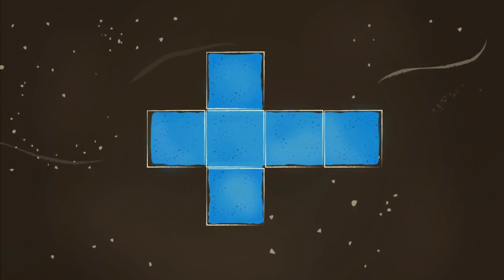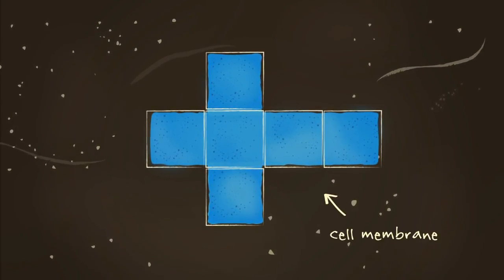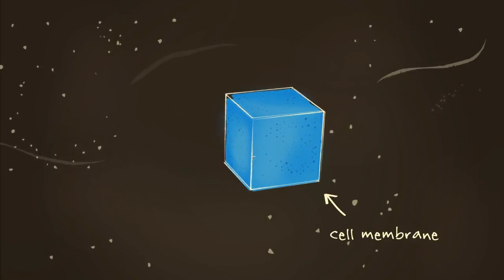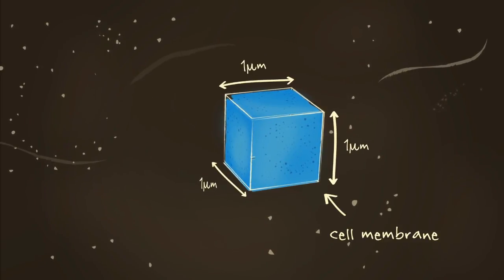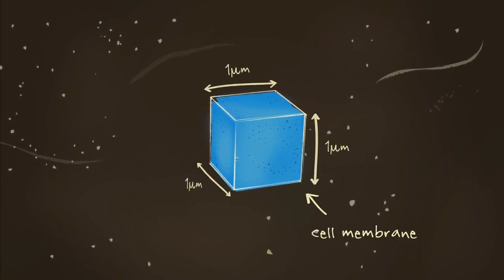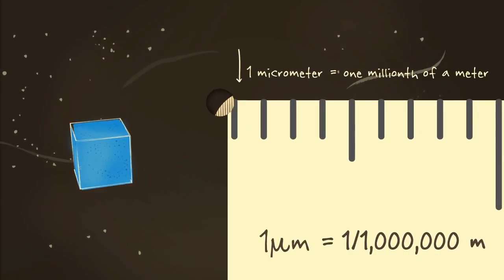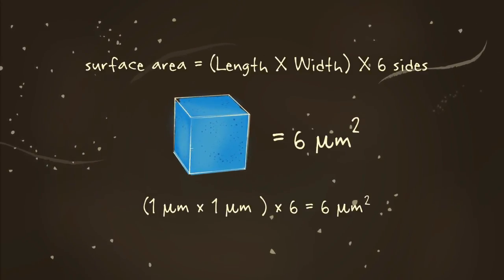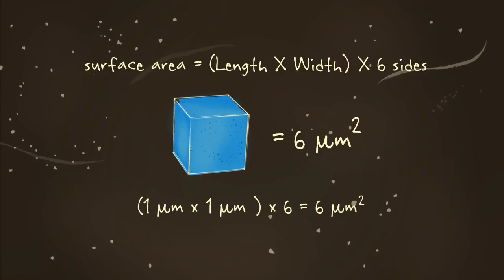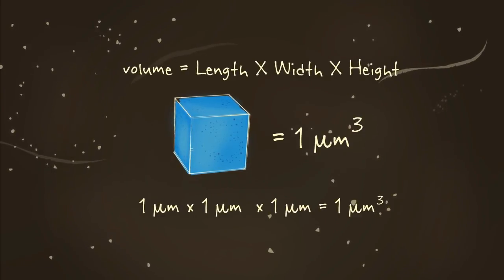A cube has six faces. These represent the cell membrane and make up its surface area. A cube measuring one micrometer on each side, that's one millionth of a meter, would have a total surface area of six square micrometers, and its volume would be one cubic micrometer.